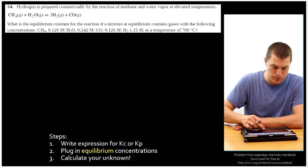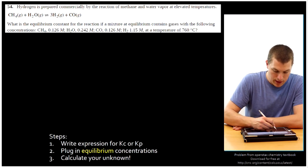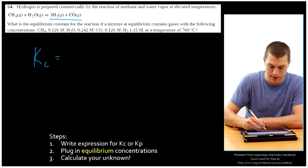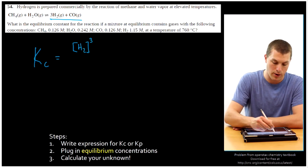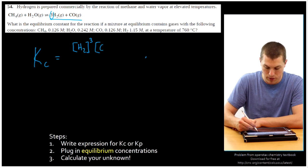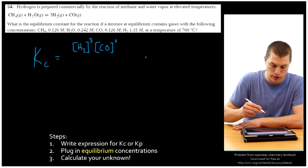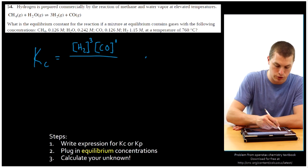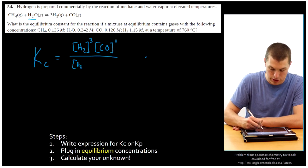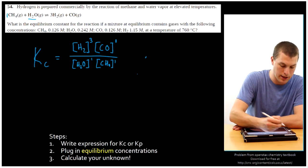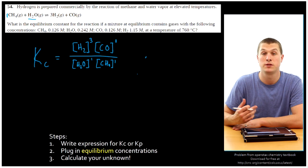Step one: write the expression for our equilibrium constant. We're going to write Kc since we're given concentrations. Remember that we put products over reactants. Our products are in brackets, meaning we're dealing with molarity. I'm going to raise hydrogen to the third power because there's a 3 in front of hydrogen, and carbon monoxide to the first power because there's a 1 in front of it. Then I divide by my reactants — water to the first power and methane to the first power, an implied one. That is the mathematical expression for our equilibrium constant.